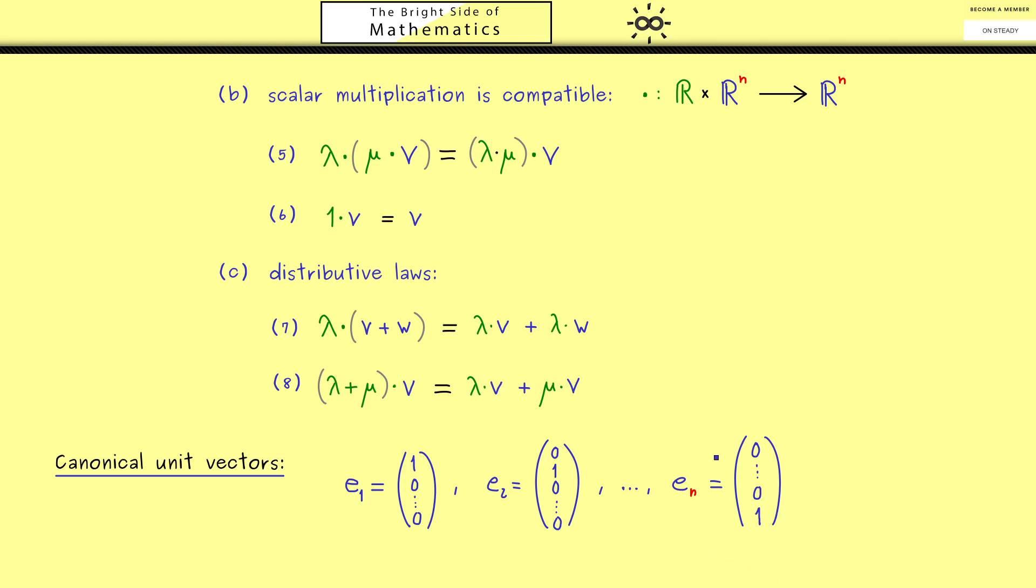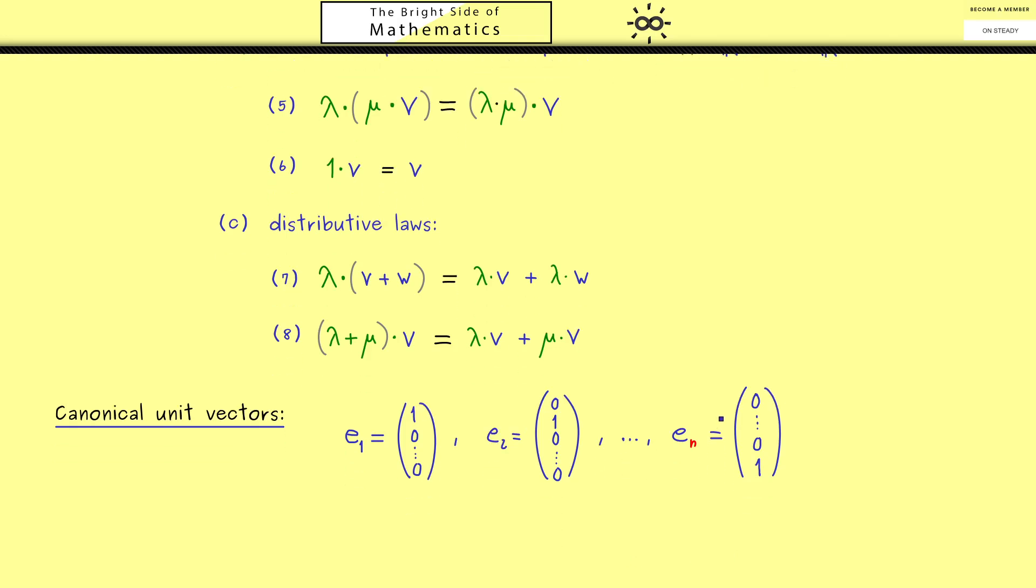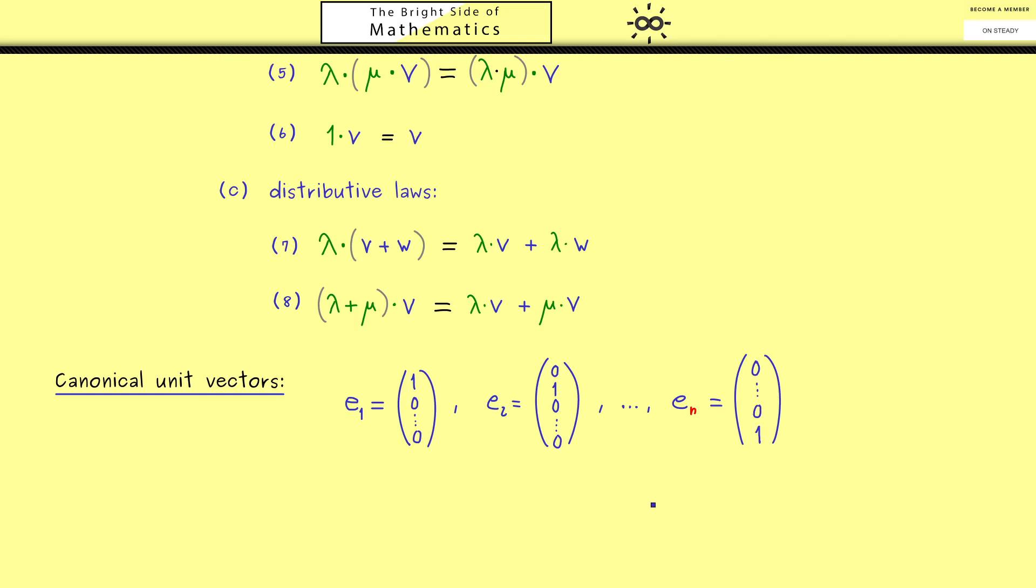Now you might ask why do we need these special vectors anyway. And indeed I can immediately give you one application. Because we can write every vector v as a linear combination of these vectors. For this we just take our vector v with components v1, v2 and so on. And then we can use these components as scalars in the linear combination. So we have the sum vj times ej. And here please don't forget vj is a scalar and ej is a vector in R^n. Hence this is a linear combination with the resulting vector v.